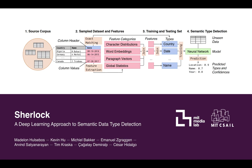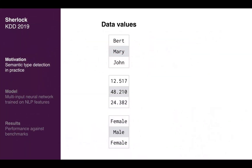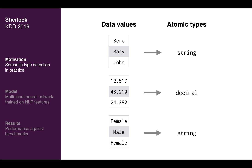Sherlock is a deep learning model for detecting semantic data types that is trained on a large collection of real-world data. While most systems reliably detect atomic types such as strings and decimals, semantic types provide finer-grained descriptions of the data by establishing correspondences between columns and real-world concepts.